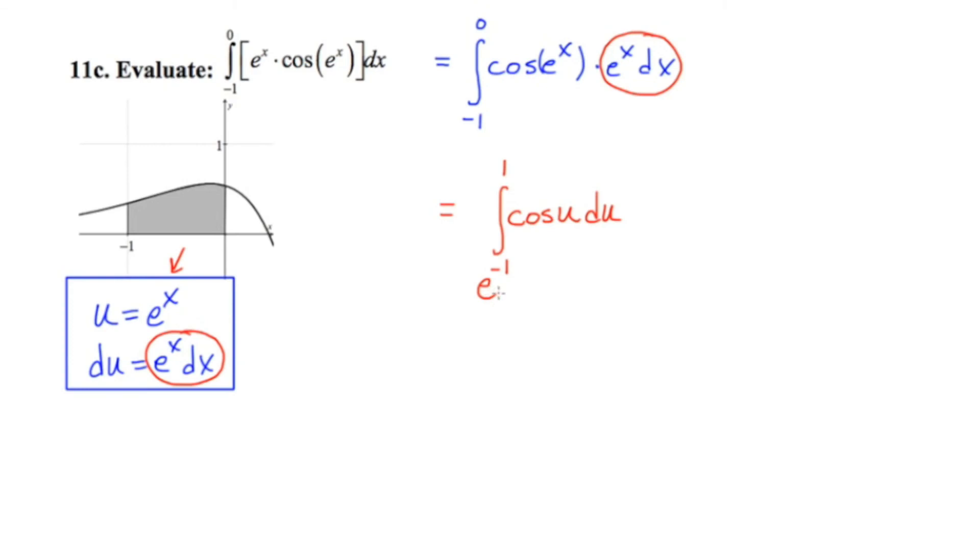e to the negative one is like one over e, and if e can be thought of very roughly as just the number three, this is like one third. So just to check to make sure this is the low number and that's the high number. This works. This is fine.